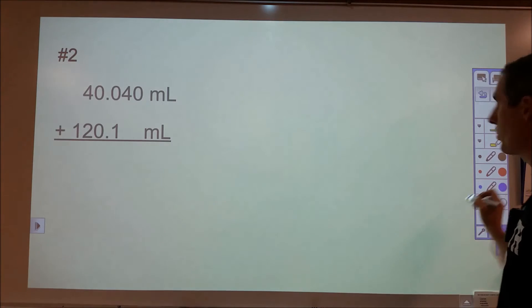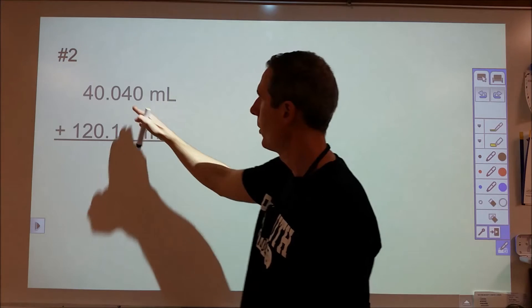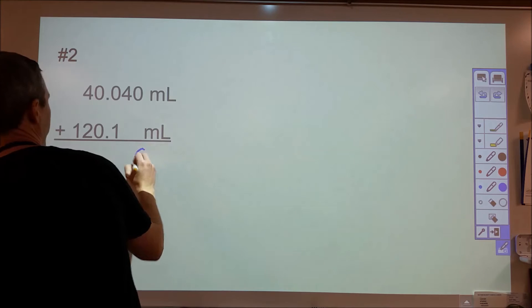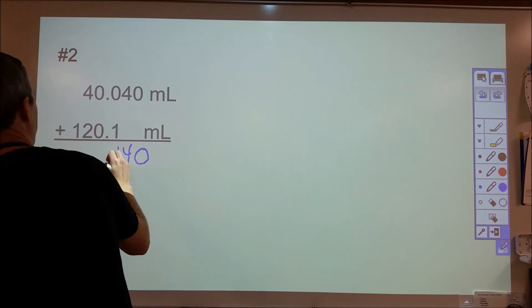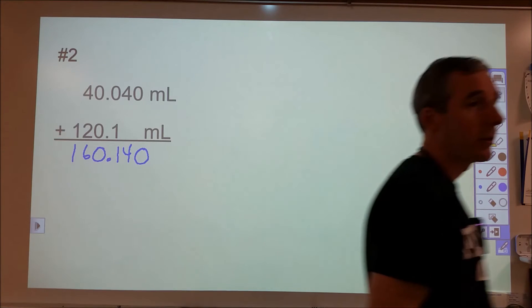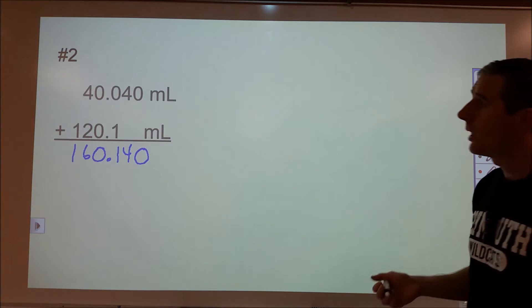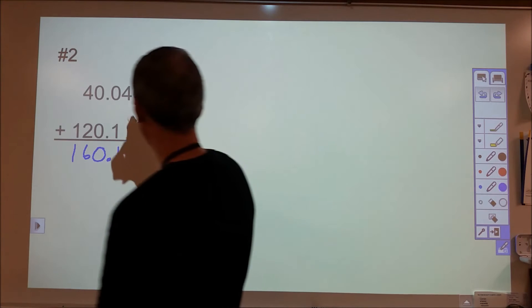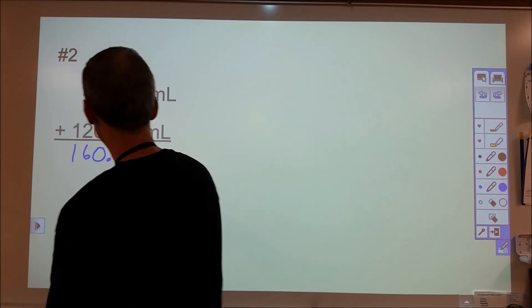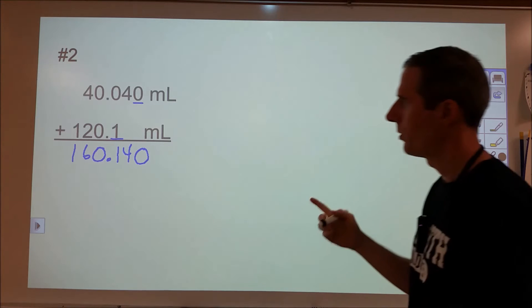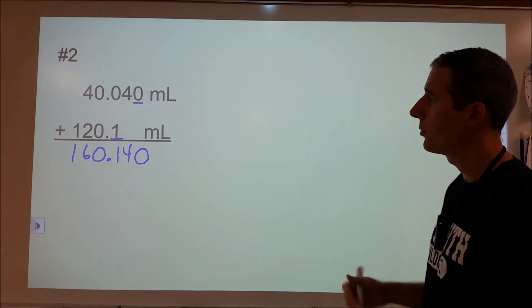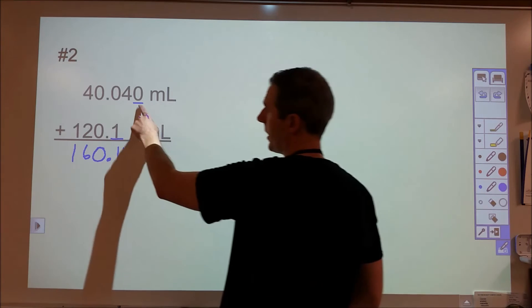We're adding and subtracting. So here we have 40.040 plus 120.1. We don't need to plug this into a calculator, it's 160.140. Now what I want to do is look at the different places. Adding and subtracting we're going to look at the last significant digit. So the 0 for the 40.040 and the 1 for the 120.1.